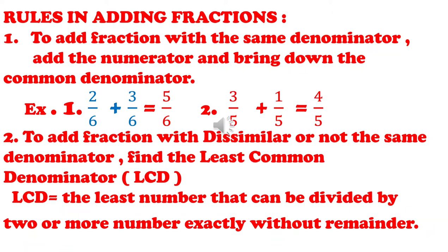We have an example. If we look at the two fractions, they have the same denominator: 2 over 6 plus 3 over 6. They both have the same denominator, so rule number one will apply. We add 2 and 3 to get 5, then bring down the common denominator, which is 6. That's how to apply rule number one — it is applicable when the two denominators are the same, or they have similar denominators.